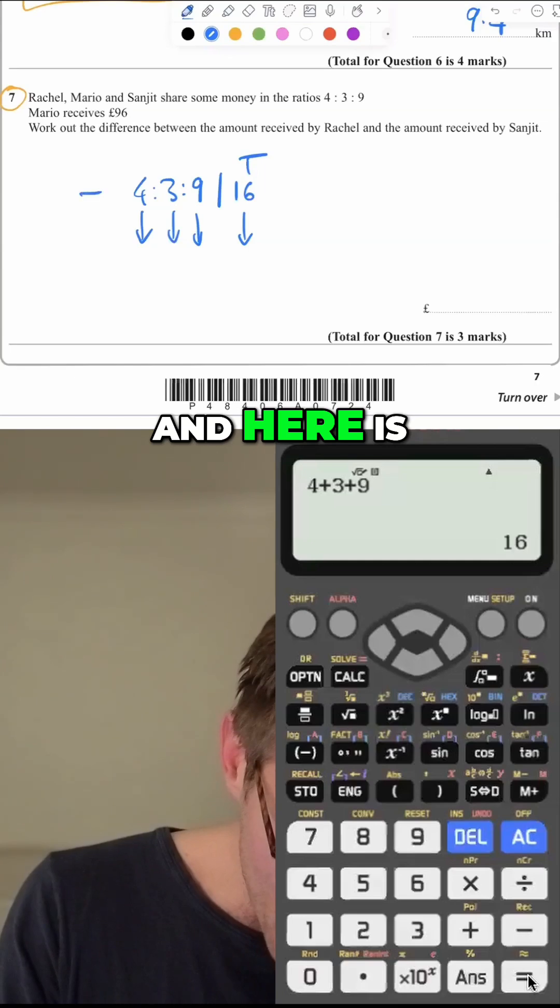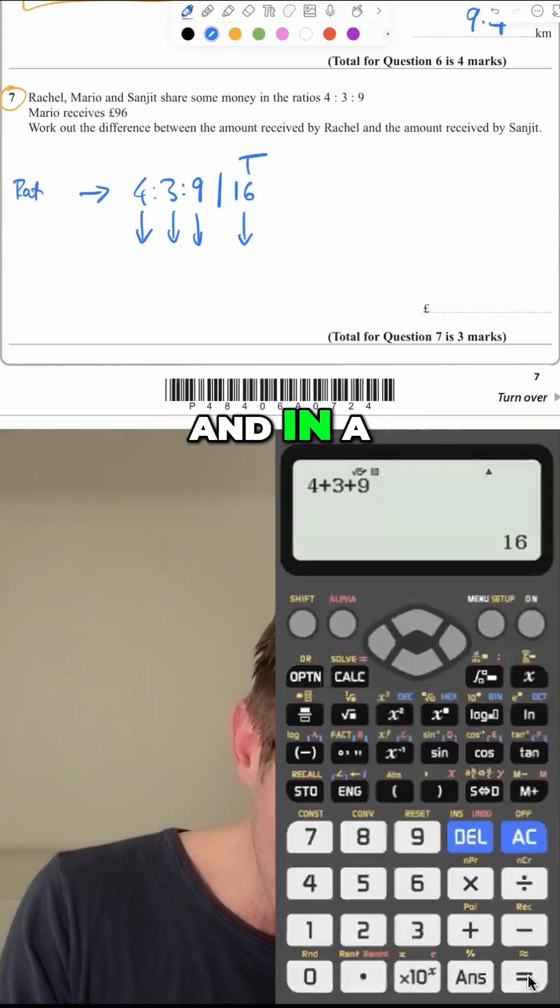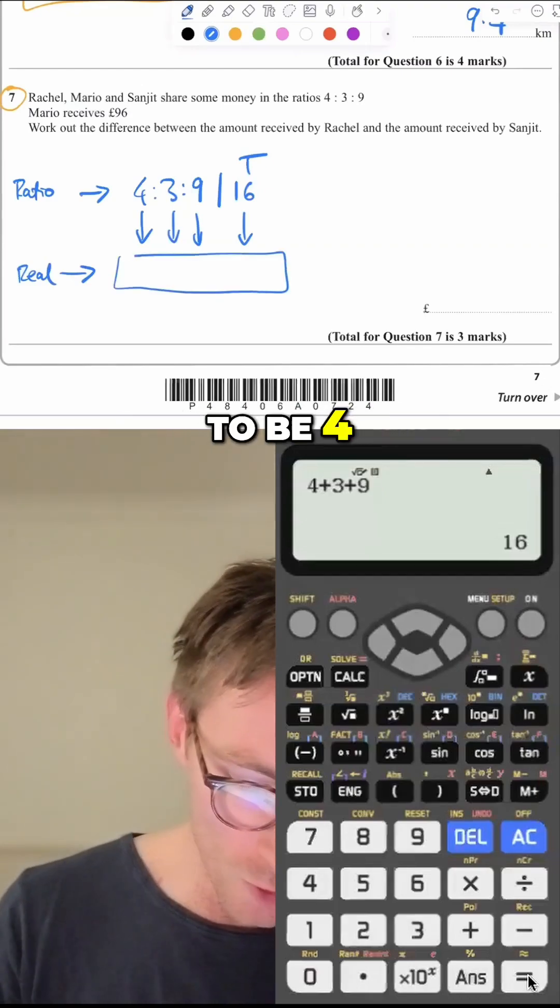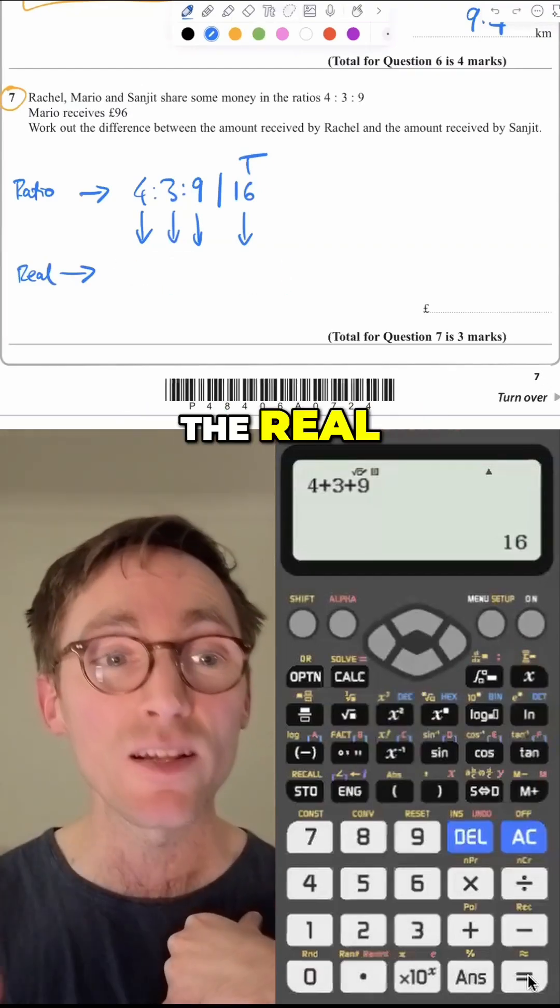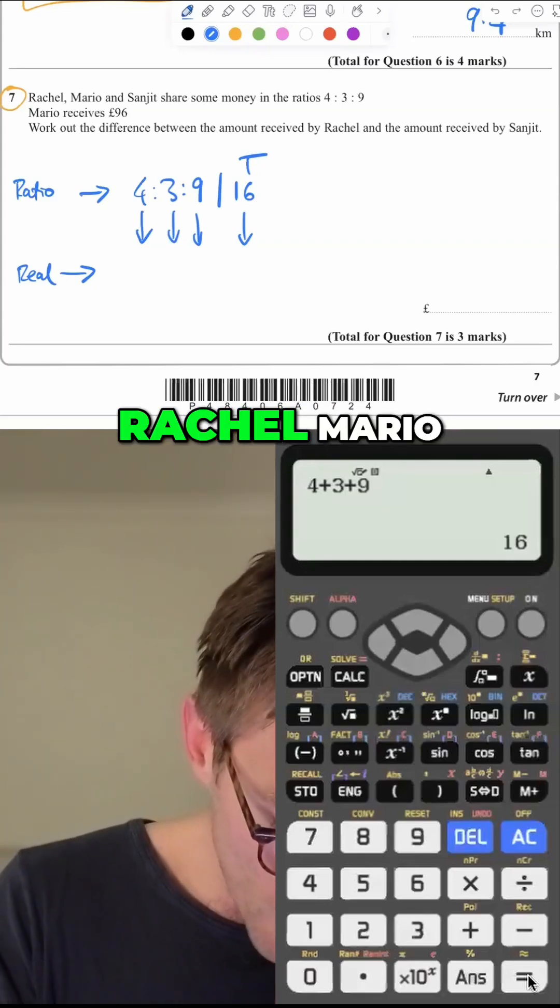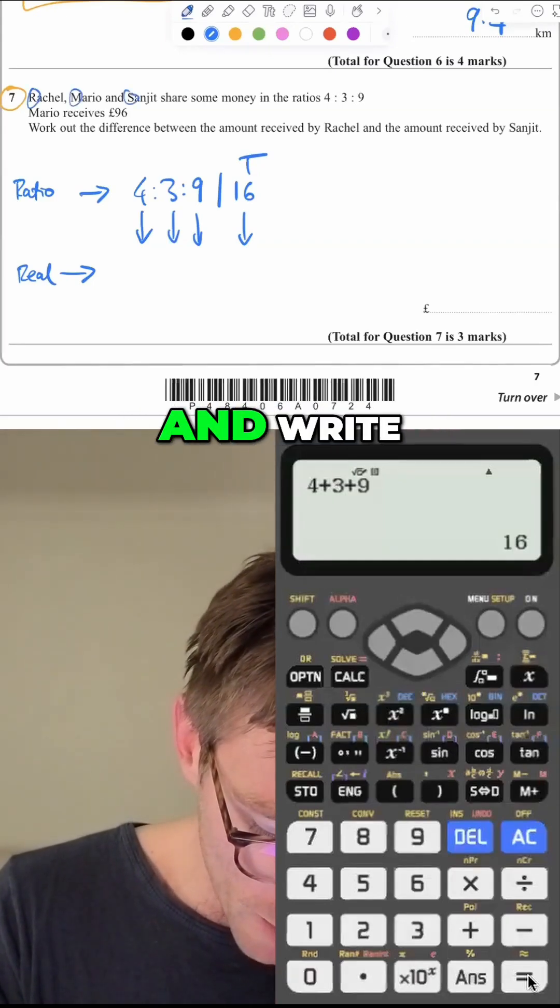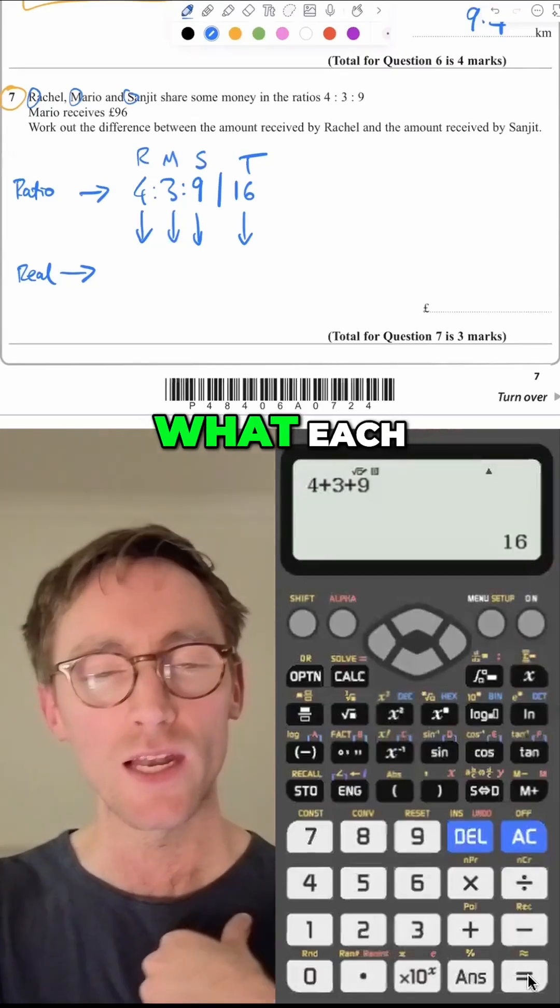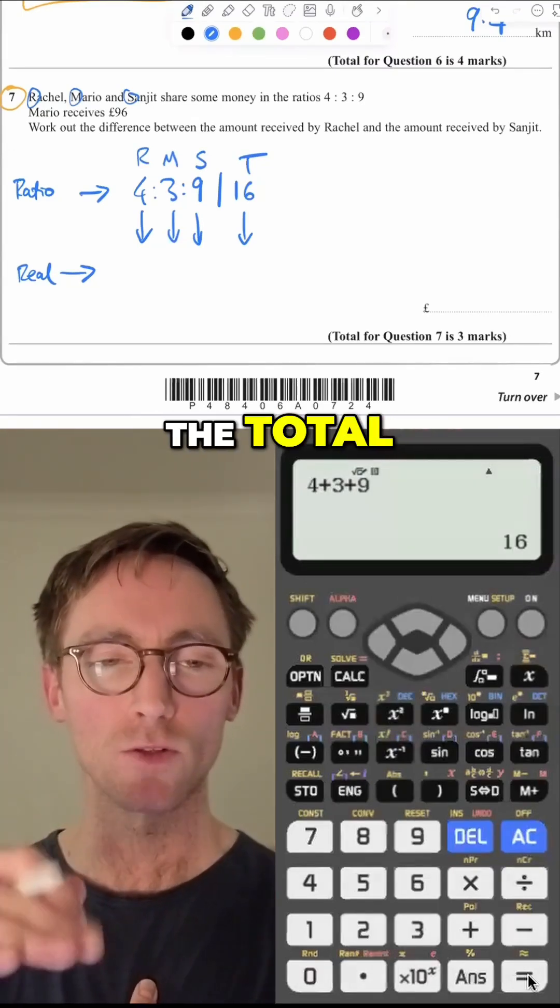And here is the ratio. And in a ratios question, down here is like the real. So down here, there's going to be four numbers and they all represent the real number. And I would encourage you to do this as well: Rachel, Mario, Sanjit. And write those above so you know. You have to write what each number represents and then put the total, draw the arrows.